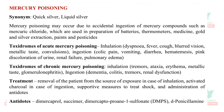Mercury poisoning (quicksilver or liquid silver) may occur due to accidental ingestion of mercury compounds present in thermometers, medicines, gold and silver extraction, paints, and pesticides. Acute mercury poisoning by inhalation causes dyspnea, fever, and cough; ingestion causes colic pain, vomiting, diarrhea, hematemesis, pink discoloration of urine, renal failure, and pulmonary edema. Chronic mercury poisoning by inhalation causes tremors, ataxia, erythema, metallic taste, and glomerulonephritis; ingestion causes dementia, colitis, and tremors. Treatment involves removal from the source, activated charcoal for ingestion, supportive measures for shock, and antidotes including dimercaprol, oxymor, dimercaptopropane-1-sulfonate, and D-penicillamine.